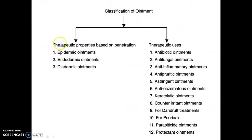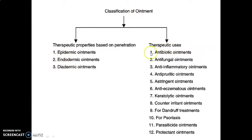There are two main classes: the first is based on therapeutic properties and penetration, and the second is based on therapeutic uses. Therapeutic properties based on penetration are further classified into three types: epidermic ointments, endodermic ointments, and diadermic ointments, classified according to the layer of skin they act on.